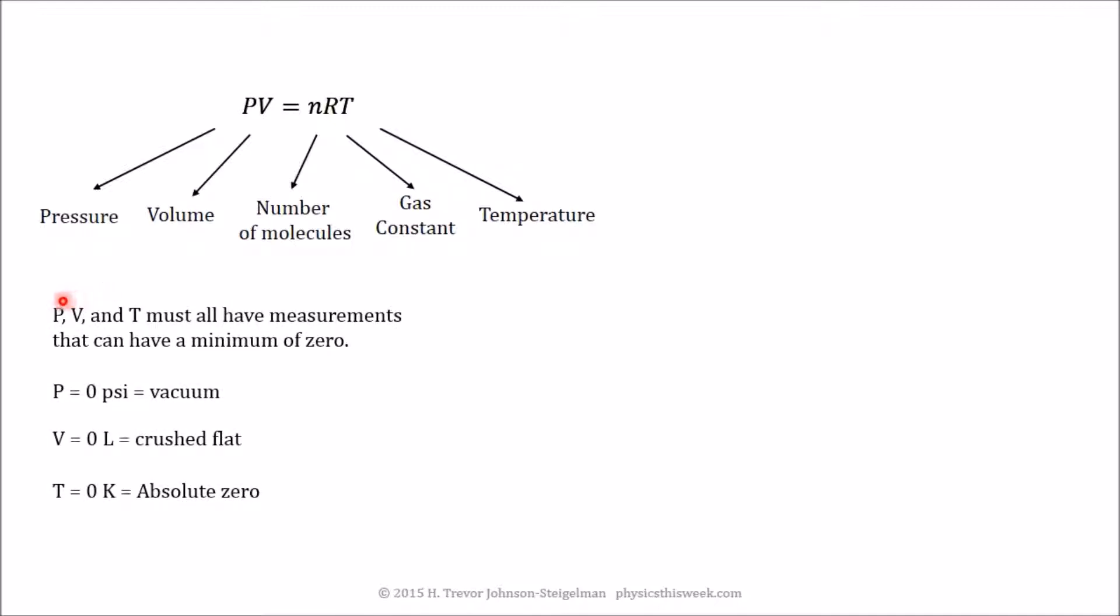Now one thing with this is that each of these variables must have some type of measurement that actually can have a minimum of zero. For example, if you can go to zero pounds per square inch, that would be known as a vacuum. If you can take the volume down to zero, that means something like your football is actually crushed flat. And the temperature actually is measured in the scale of Kelvin, in which case you can actually go to a value of absolute zero. Something like Fahrenheit or Celsius doesn't quite work because you have negative temperatures possible with those measurement systems. They're all related to one another, and we'll talk about that a little bit.